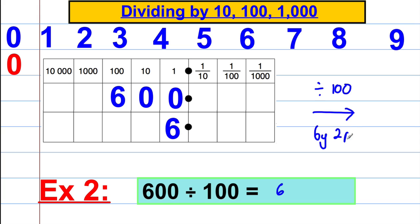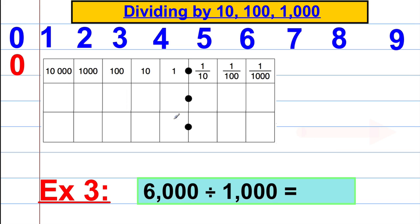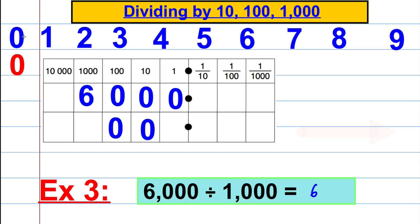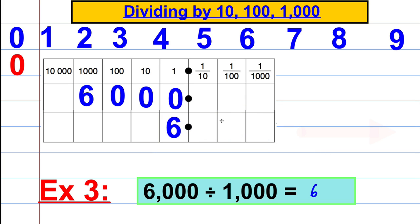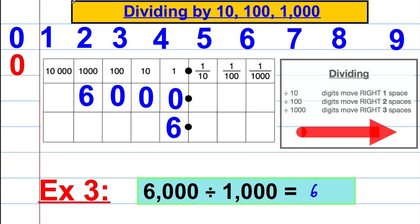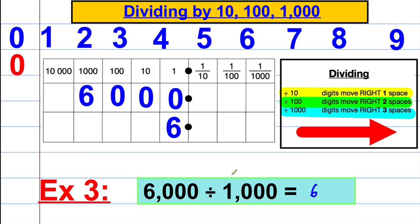For 6000 ÷ 1000, the answer is clearly 6 — the digits shift three places to the right. We can summarise: dividing by ten means moving the digits to the right by one place; dividing by a hundred means moving them to the right by two places; dividing by a thousand means moving them to the right by three places.